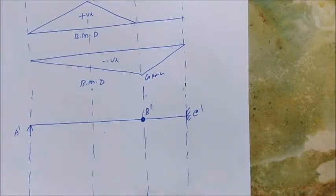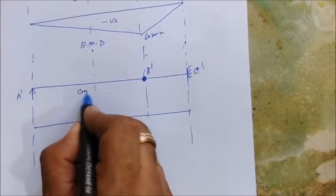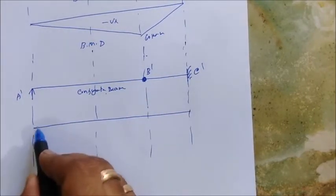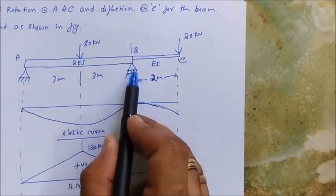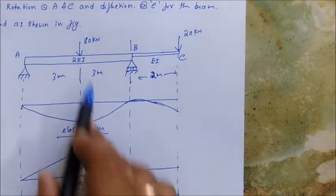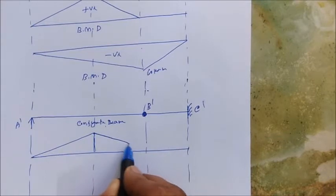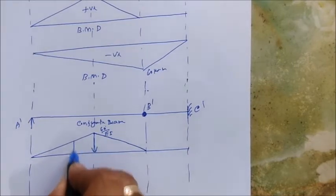Now let's draw the loadings — that is the M/EI diagram. In the region AB, the bending moment is 120 and EI is 2EI, so it is divided by 2EI giving 60/EI. I give this a downward arrow — very important. For the next part of the loading in region BC, EI is EI and the value is 60, so here it is 60/EI with an upward arrow because it is negative (hogging).